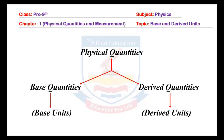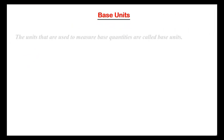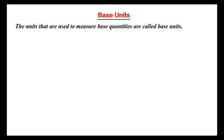Base quantities are measured using base units, and derived quantities are measured using derived units. The units that are used to measure base quantities are called base units — that is the definition.